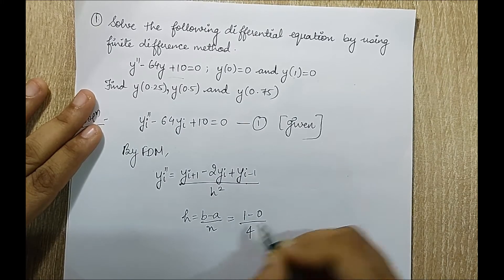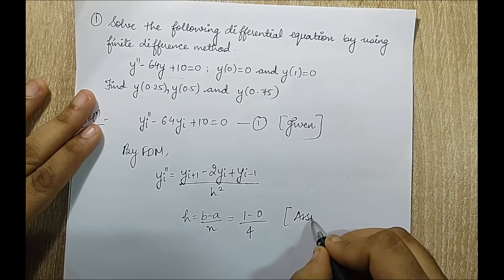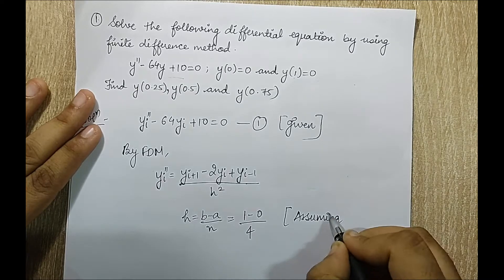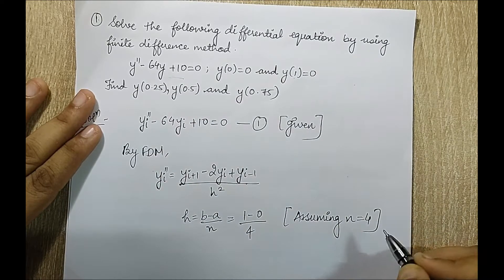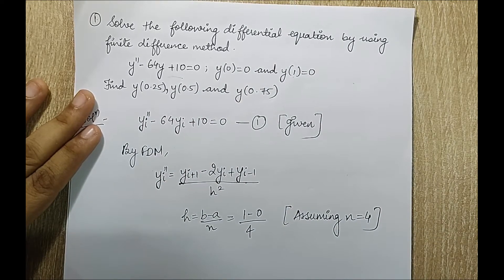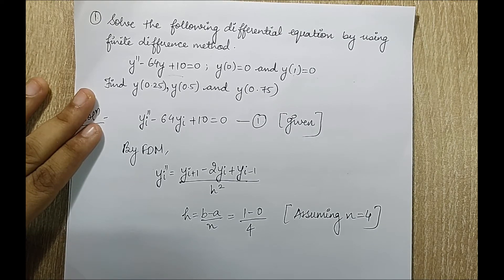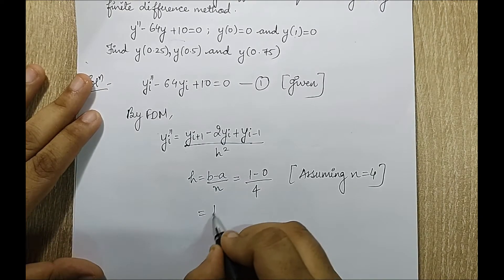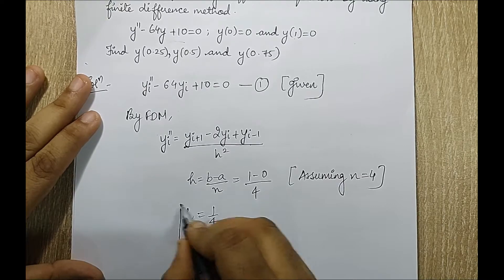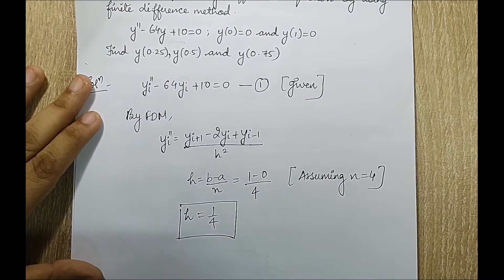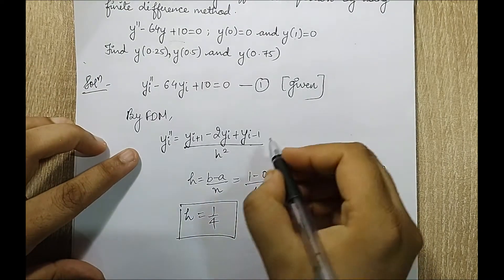So h is 1 minus 0 upon 4, assuming n is equal to 4 — that is, dividing the problem into 4 equal intervals. This gives h equal to 1 by 4. Now when I substitute this value into the finite difference formula, I can mark that as equation 2.